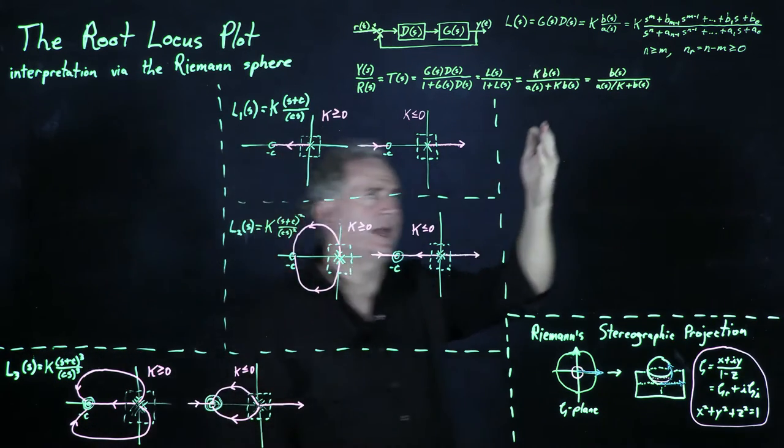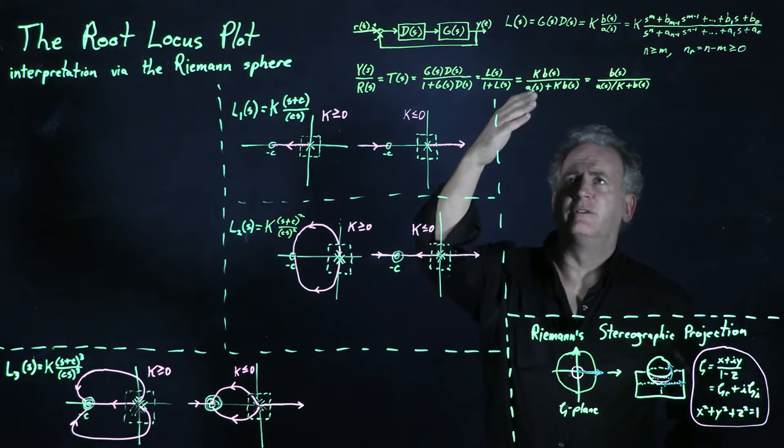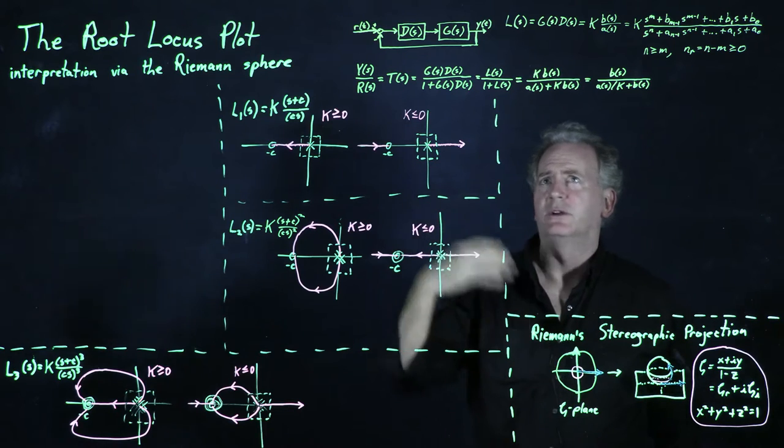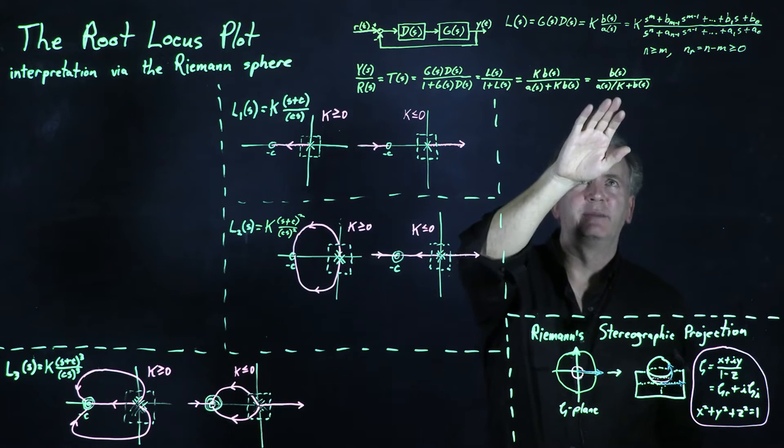What we expect to happen is that as K is small, the closed loop poles are near the values of S that make A of S go to zero. So for small K, the closed loop poles are near the open loop poles. And as K is made large, this term gets small.